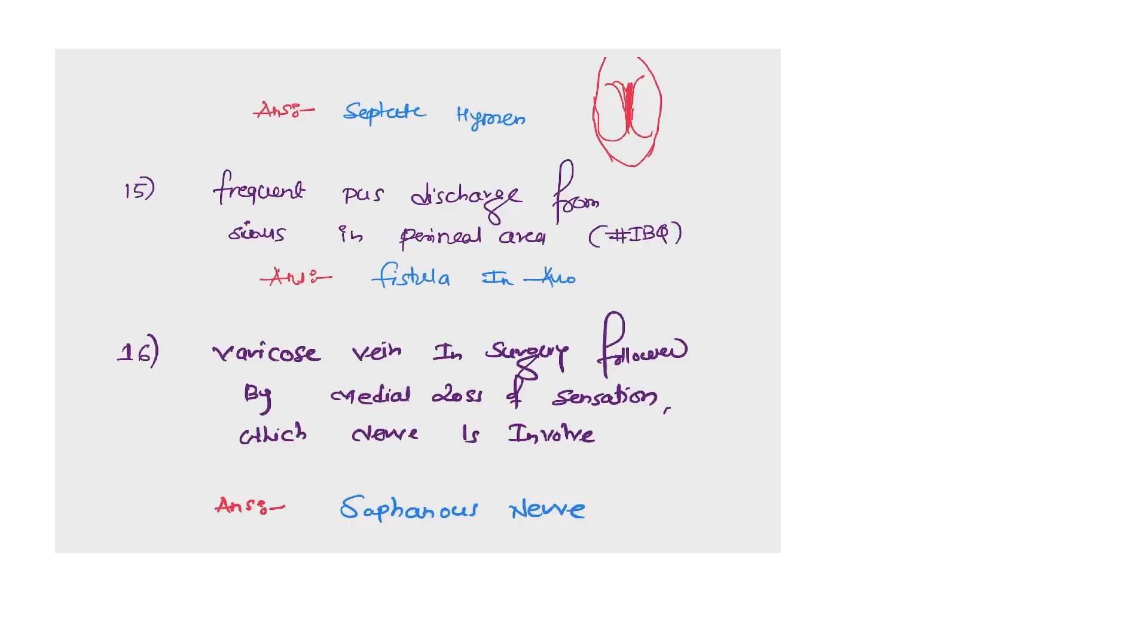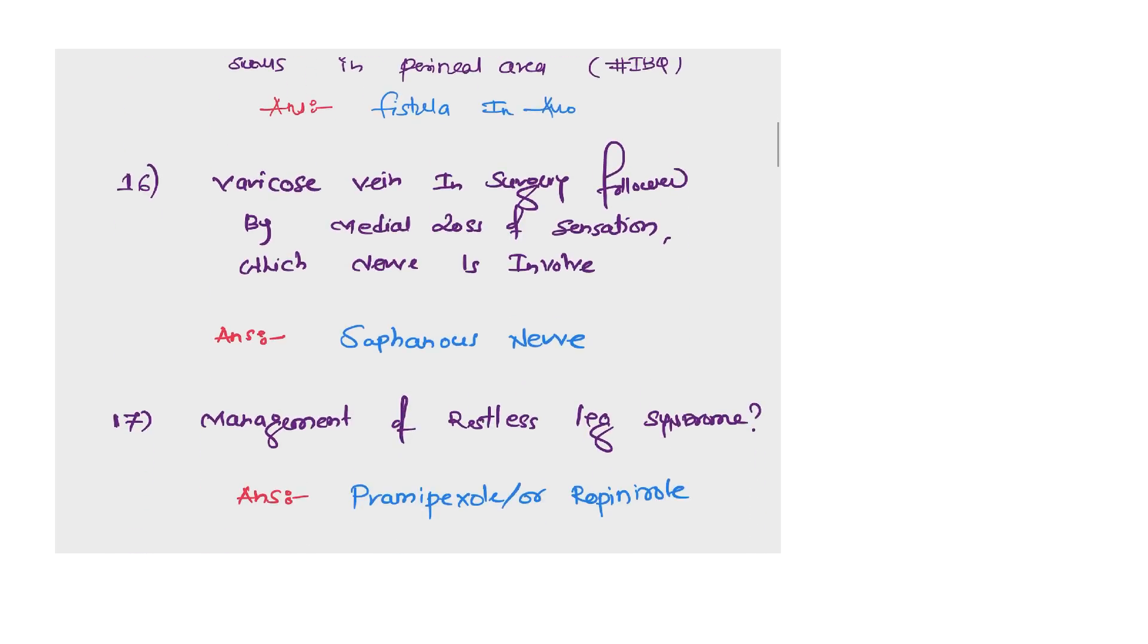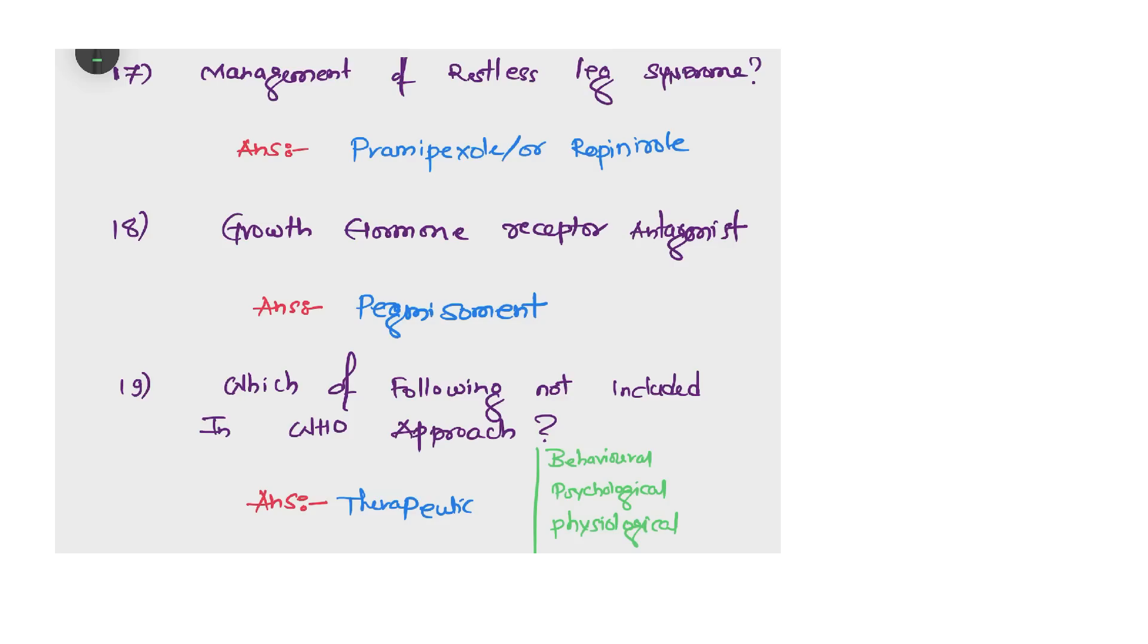Next question: frequent pus discharge from sinus in perineal area. We also have an image for this question, it is image-based. The answer is fistula in ano. Next question: varicose vein operated in surgery followed by medial loss of sensation. Which nerve is involved? The answer is saphenous nerve.